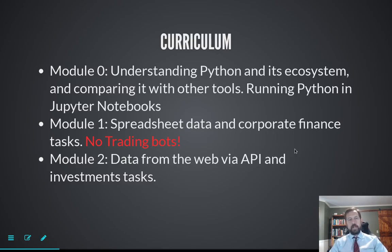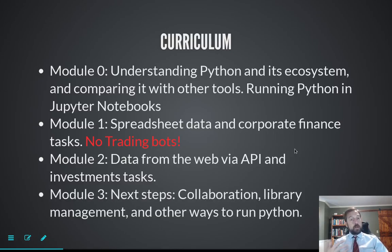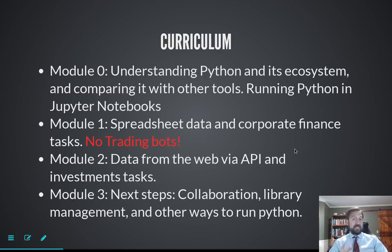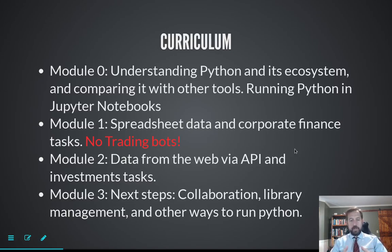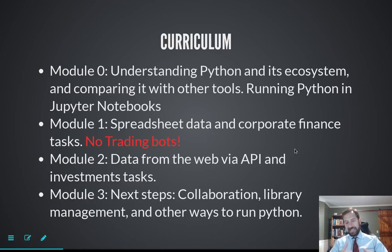In module three, the last module, we'll look at next steps and how to collaborate. We'll look at running Python outside of a Colab notebook — maybe in VS Code — and we'll cover Git and GitHub, which is important for showing off your work and collaborating with others. We'll also look at dependency management, since there are so many packages out there you can run into dependency problems, so we'll take a brief look at virtual environments. And we'll look at visualization, which is well beyond what Excel can do.